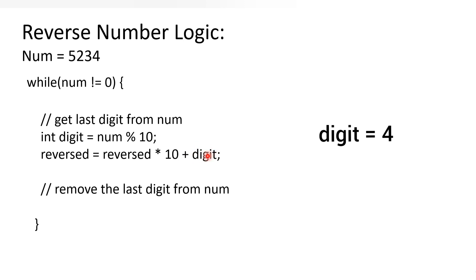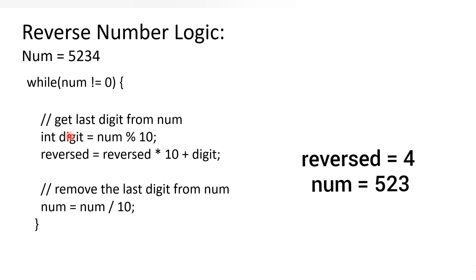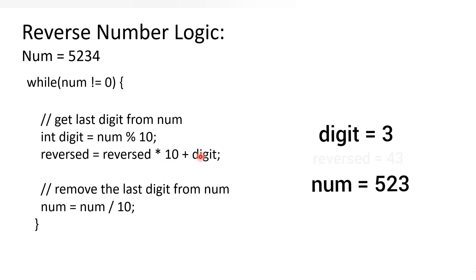Reverse becomes 0 times 10 plus digit (4), so reverse is 4. Then we update the number: 5234 divided by 10 gives quotient 523. Since 523 is not equal to zero, we stay in the loop. Next iteration: 523 modulo 10 gives digit 3. Reverse is now 4 times 10 plus 3 = 43. We update number to 52.